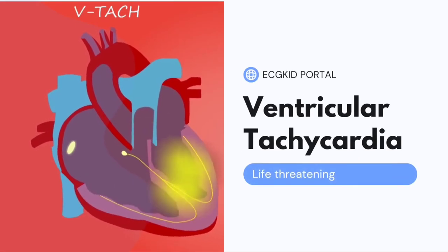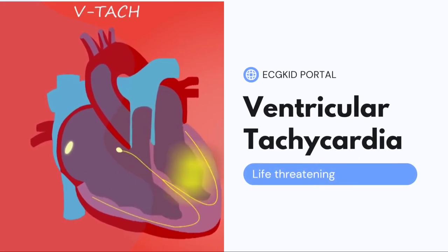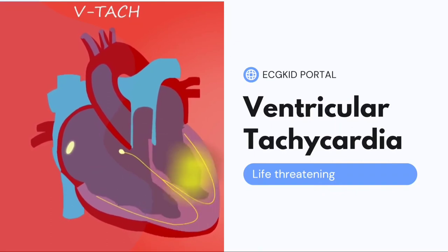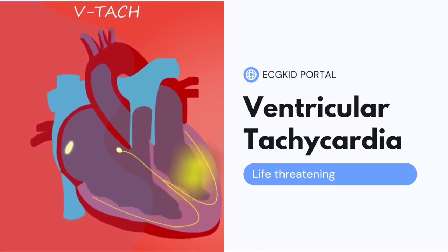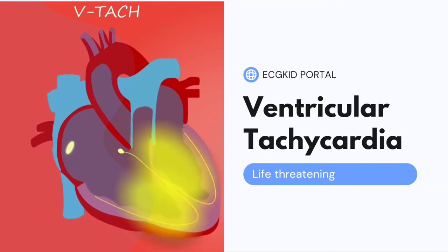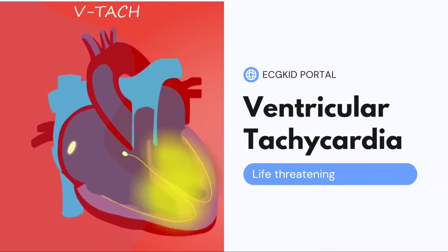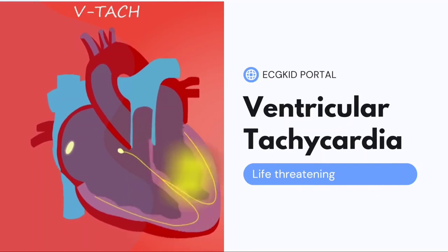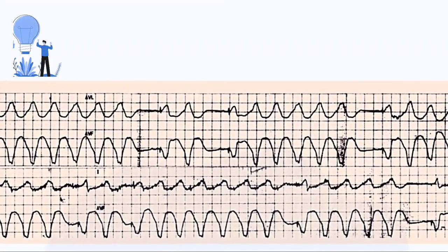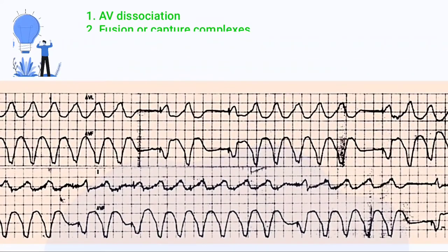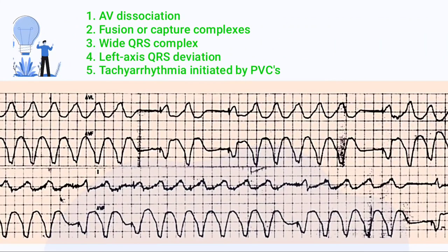Ventricular tachycardia, or VT, is a sustained cardiac rhythm of ventricular origin that occurs at a typical rate of 140 to 240 per minute. In differentiating VT from supraventricular tachycardia with aberrant conduction, the following features suggest VT: AV dissociation, fusion or capture complexes, wide QRS complex, left axis deviation, and tachyarrhythmia initiated by PVCs.